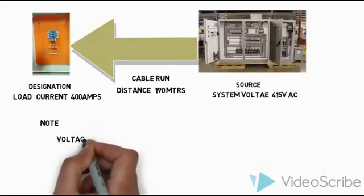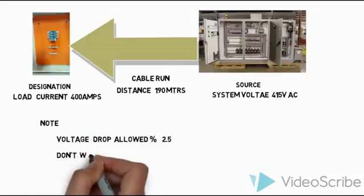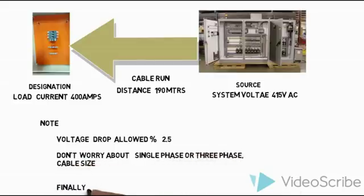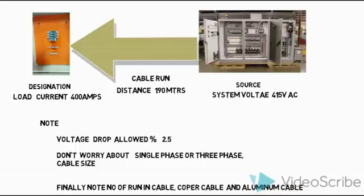Finally, some key points we need to keep in mind: the voltage drop allowance is 2.5 percentage, and don't worry about single phase or three phase - this is the same for single phase and three phase. And then number of runs - how many times cable has been run. And then copper, aluminum - the copper, aluminum have the same voltage drop calculation formula.